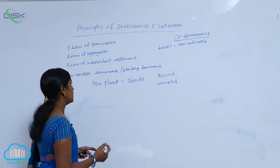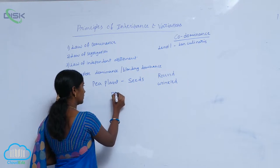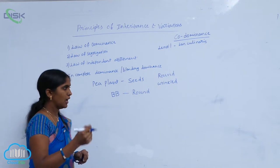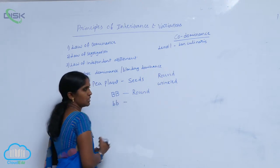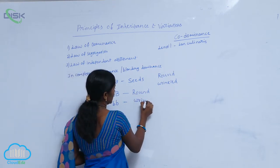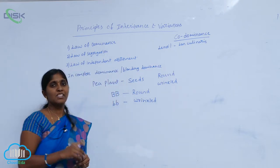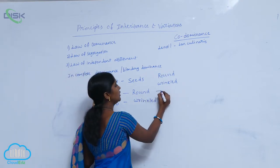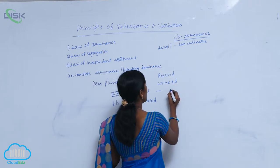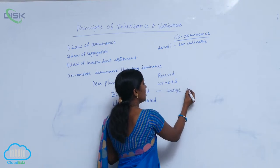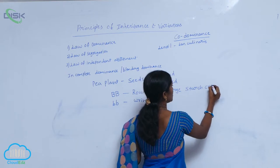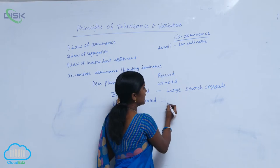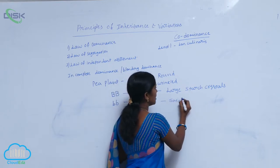How they are different: there are two types of genotypes. If the genotype is capital B capital B, the seed shape is round. When it is small b small b, that is the recessive character, and the seed is wrinkled. Two shapes of seeds are produced in pea plant according to genotypic presence. When round seeds are matured, they produce large starch crystals. Matured wrinkled seeds after maturation produce small starch crystals.